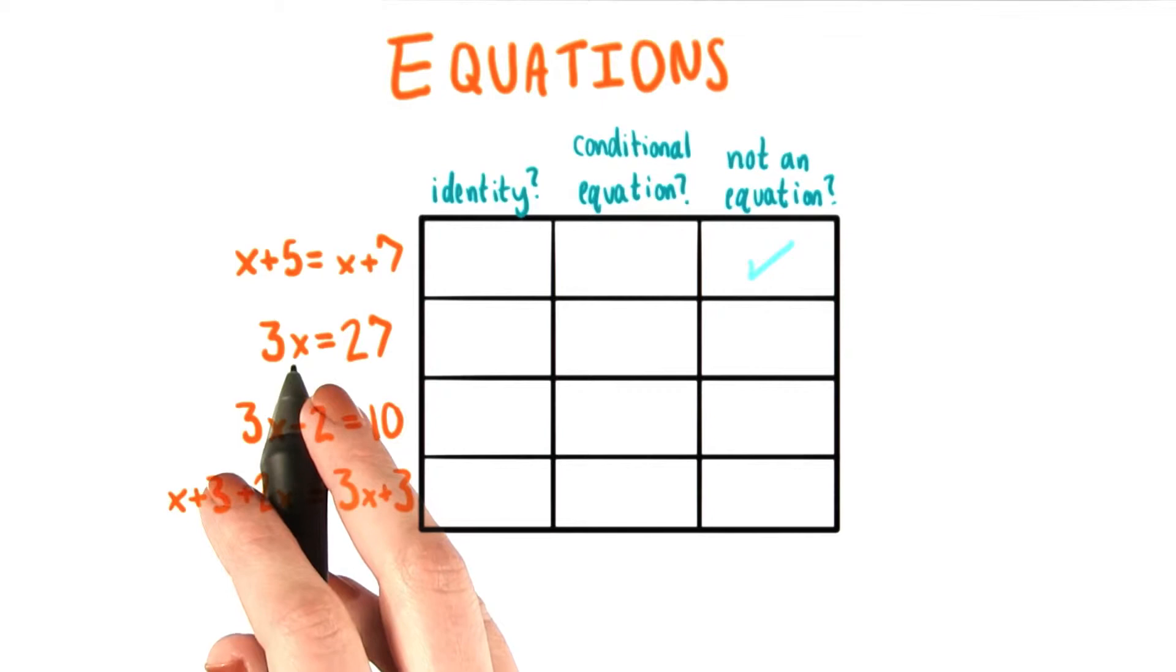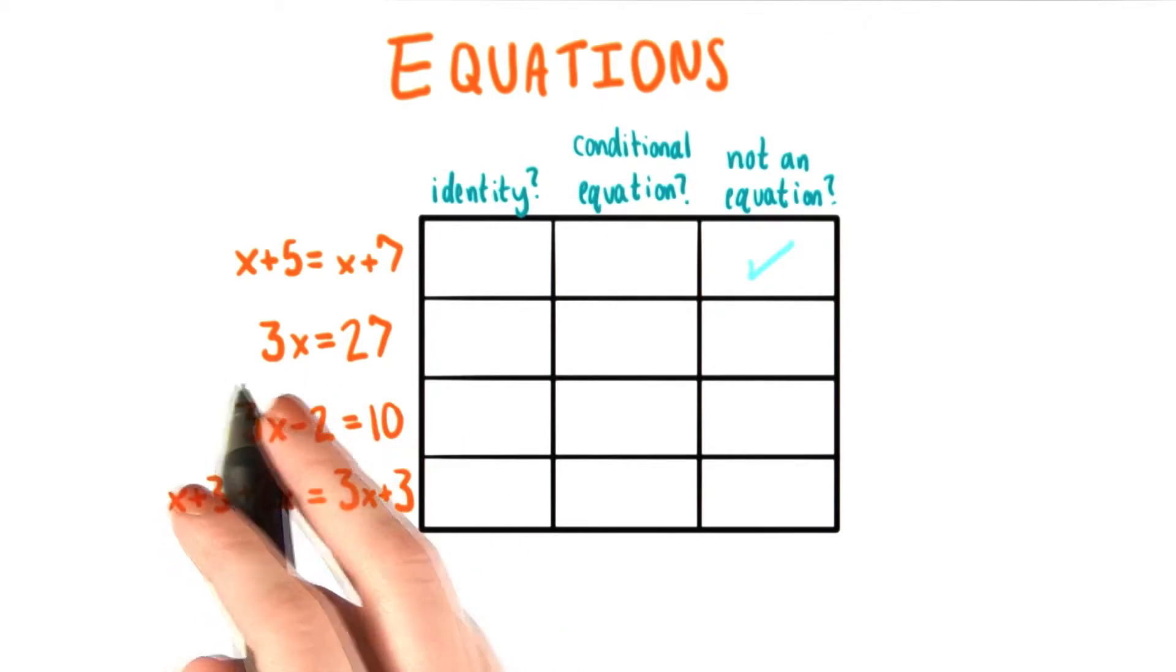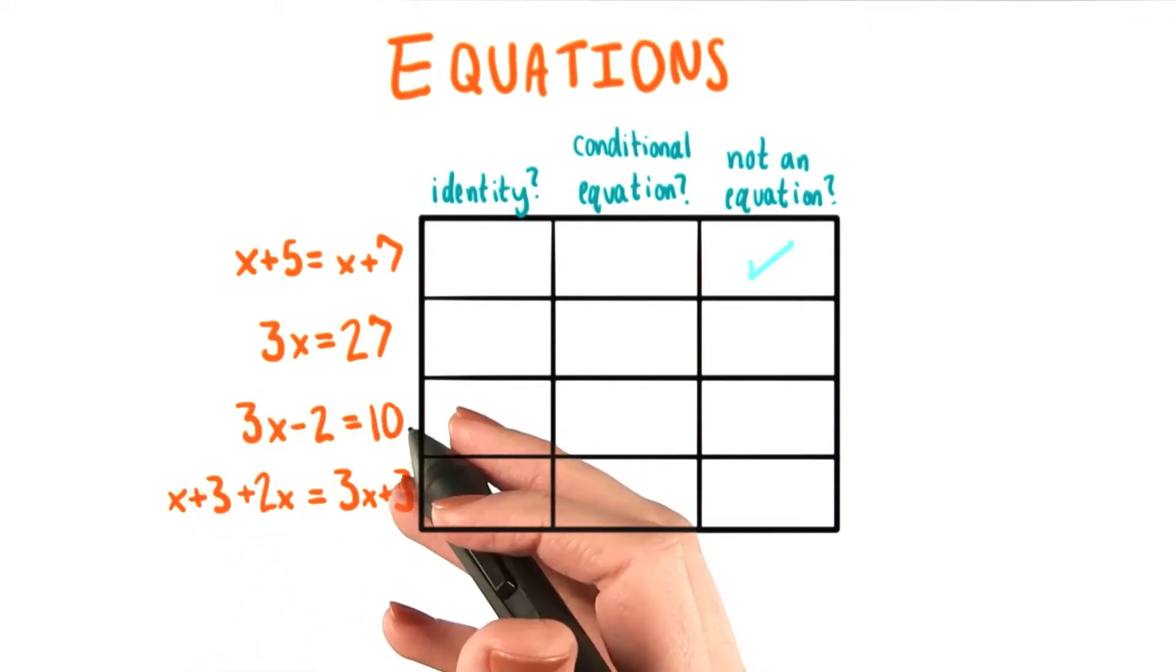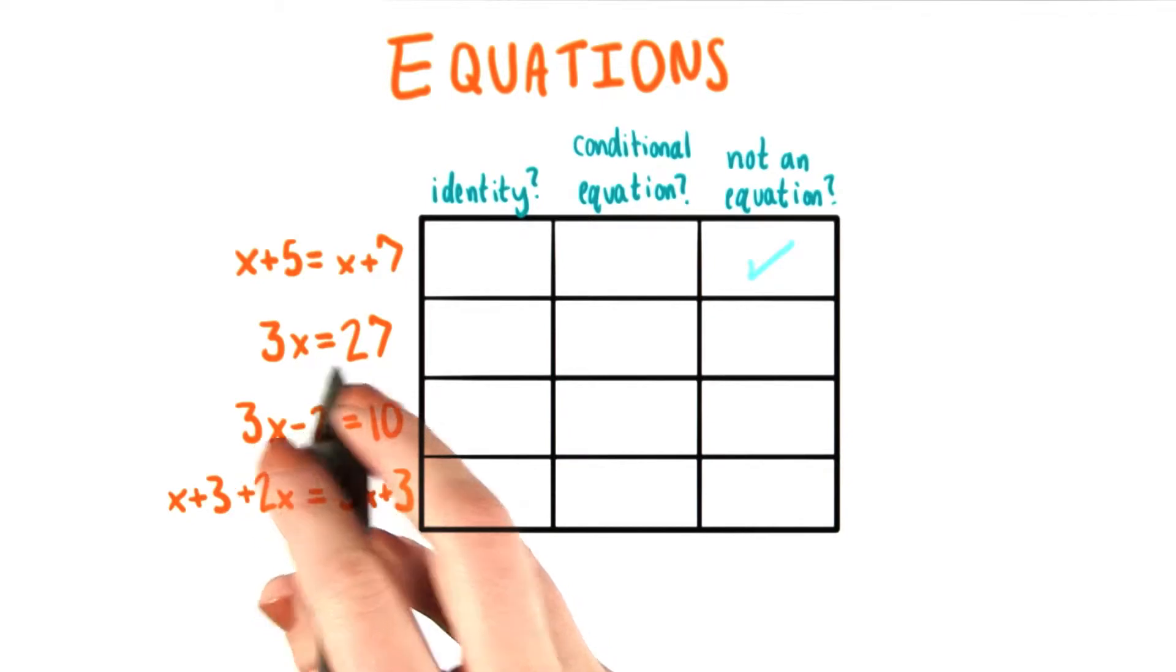There is some number that we can substitute for x though, in the second equation, that gives us 27 when we multiply it by 3. So what times 3 equals 27? 9. So this is an equation.